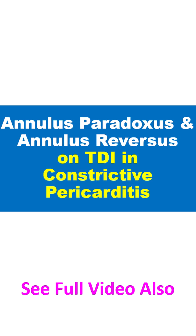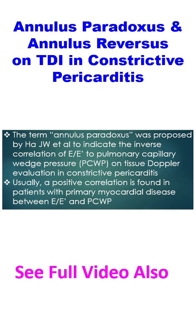The term annulus paradoxus was proposed by Ha and associates to indicate the inverse correlation of E by E' to pulmonary capillary wedge pressure on tissue Doppler evaluation in Constrictive Pericarditis. Usually, a positive correlation is found in patients with primary myocardial disease between E by E' and PCWP.